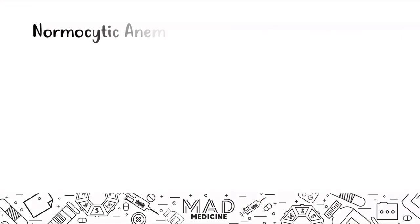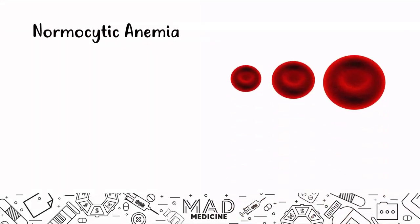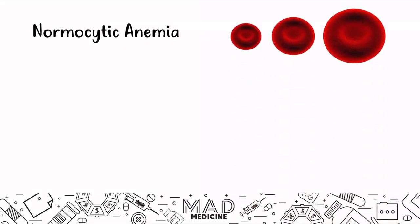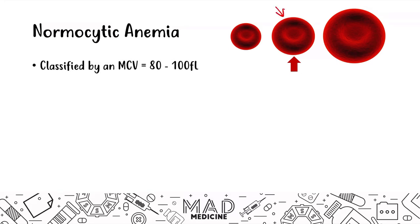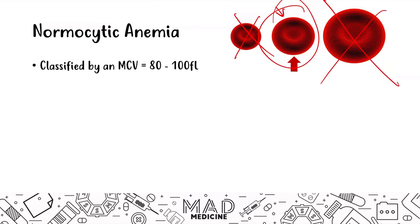Let's talk about normocytic anemias. Normocytic anemias are anemias where the red blood cell is normal in size. Therefore, the MCV is going to be 80 to 100. We have put an arrow to this normal-sized red blood cell — not microcytic, not macrocytic. You have a normal-sized red blood cell.